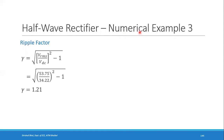In the next class, we will start with another type of rectifier, since the half wave rectifier has significant drawbacks — its efficiency is very poor and the ripple factor is too high.